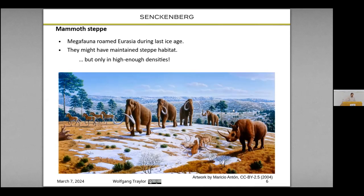So now to my case study. I have dealt with the mammoth steppe of Eurasia — going back 12,000 to 20,000 years ago — and look at the huge steppe vegetation ecosystem that spanned all of Eurasia in the last ice age. Here we have many animals that are now extinct: mammoths, bison, horses, etc., in a very unique assemblage that doesn't have an analog nowadays.